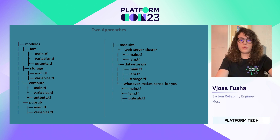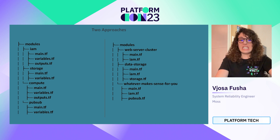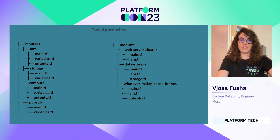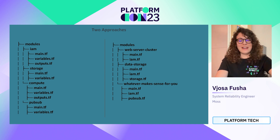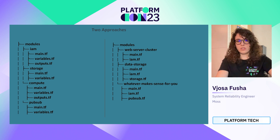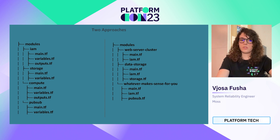I wanted to share two approaches I came across working with Terraform. One is dividing everything into modules. For example, we have an IAM module, storage, and network — whatever really makes sense for our infrastructure. In IAM, we store everything related to permissions for the whole project. With storage, the same. So we have some sort of services grouping — let's call it services grouping.